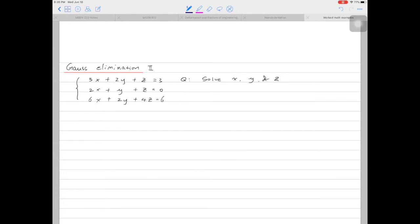You can see there are three variables x, y, and z, and three equations here. So if we write these into the matrix form, we'll get something like this.